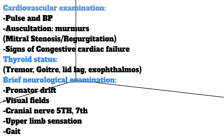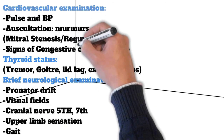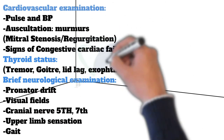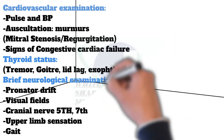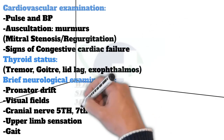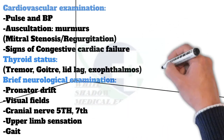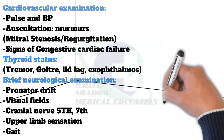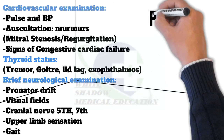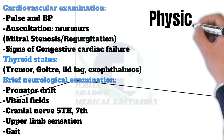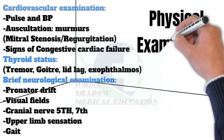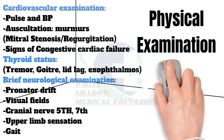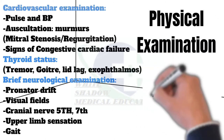Next, perform an assessment of thyroid status including tremor, goiter, eye disease, lid lag, exophthalmos, and Graves' disease. Then perform a brief neurological examination including pronator drift, visual fields, cranial nerve 7th weakness, cranial nerve 5th and upper limb sensation, and gait.